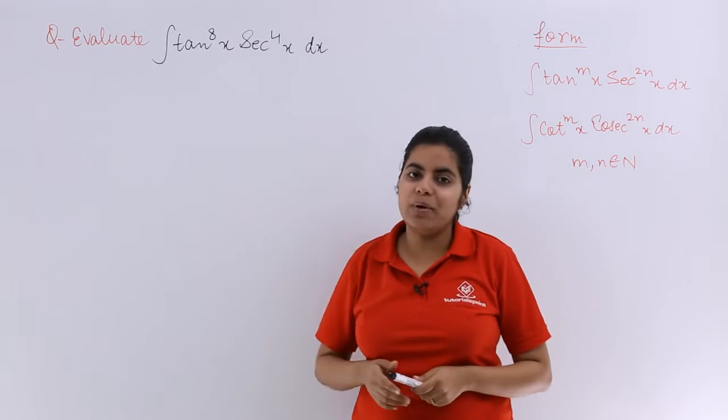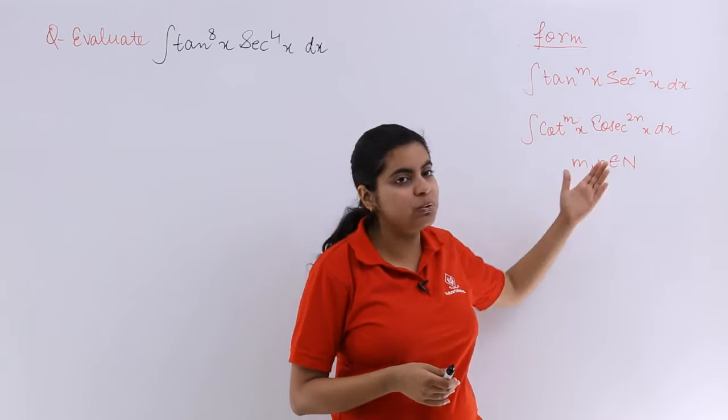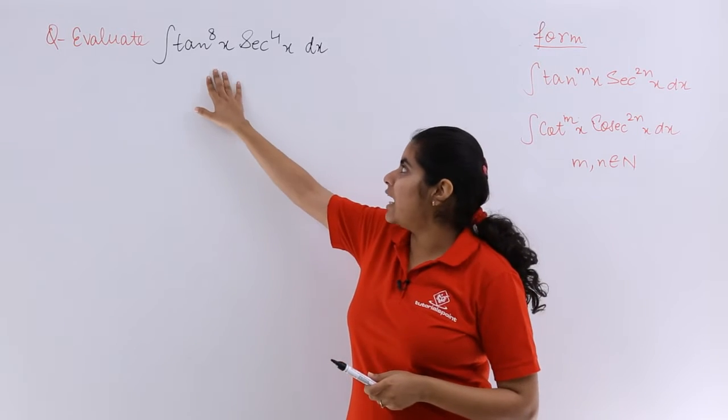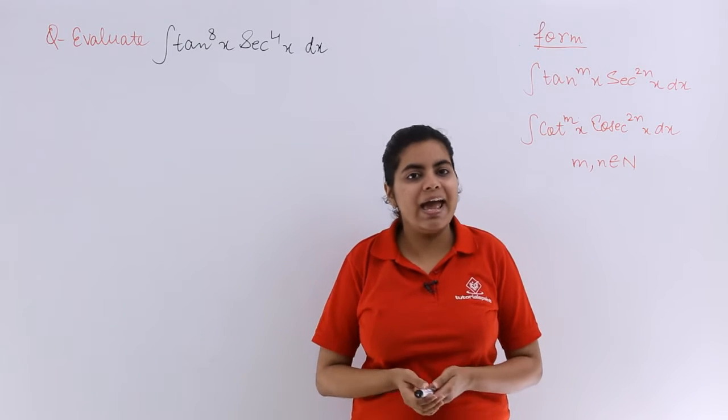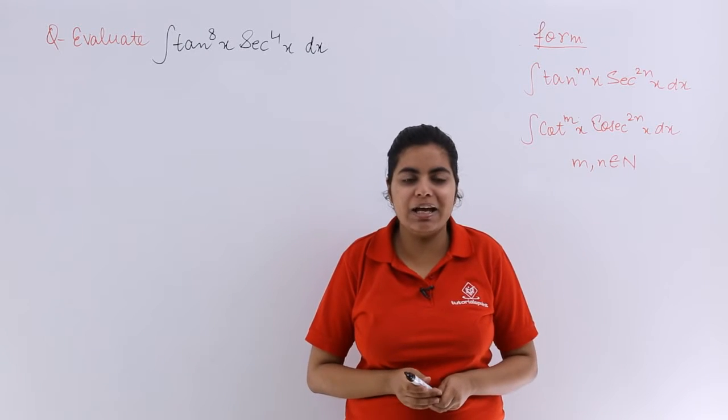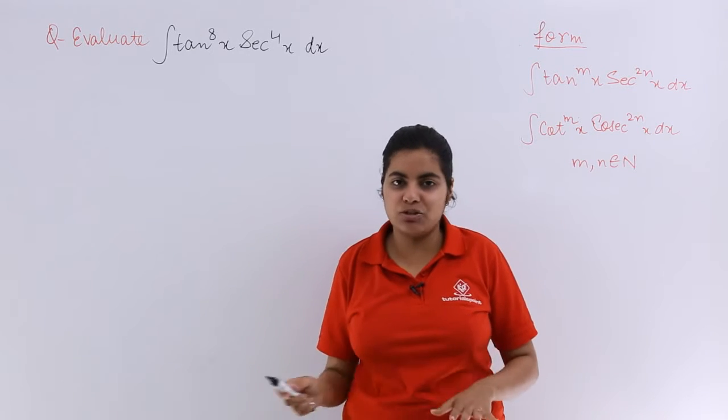So we have a standard question here. The question is based on the first form. Similarly, you will do the second one. So it says tan x raised to the power 8, secant x raised to the power 4dx is actually what we have to evaluate.